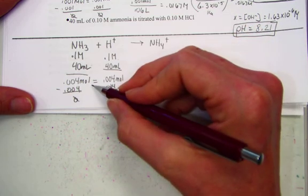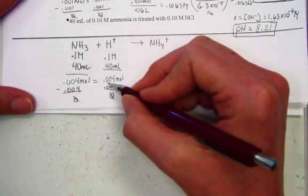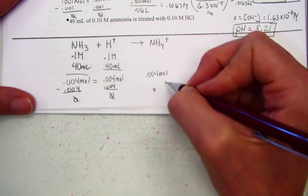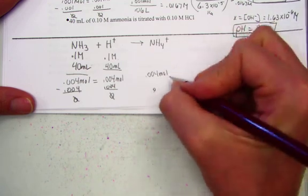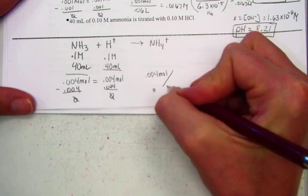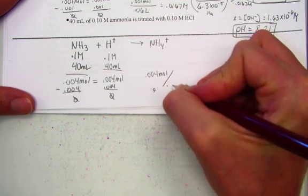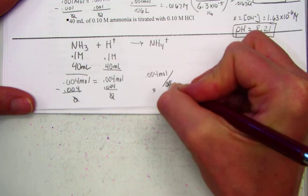Knowing that 0.004 moles equal value of acid and base would produce 0.004 moles of this ammonium ion, we'll divide that by the new added volume, 80 mls or 0.08 liters.